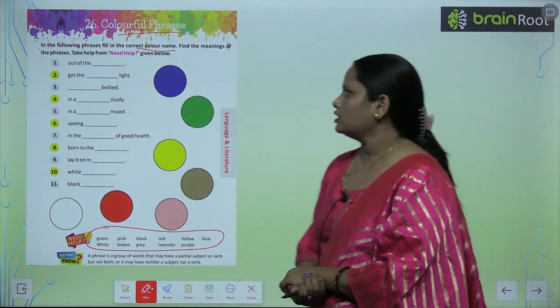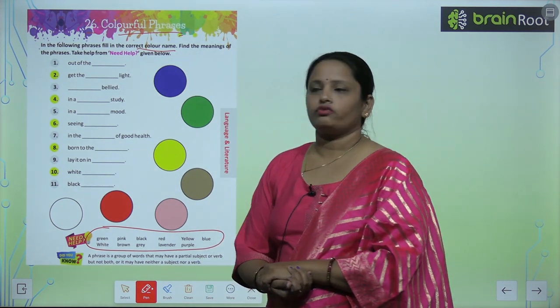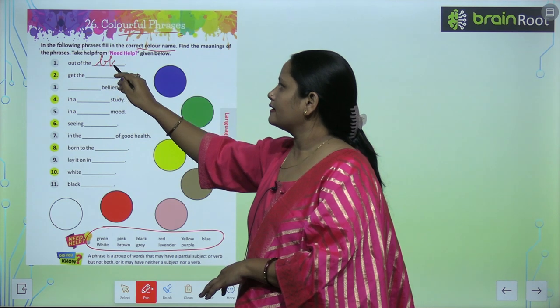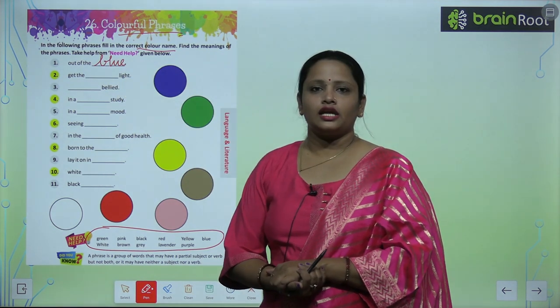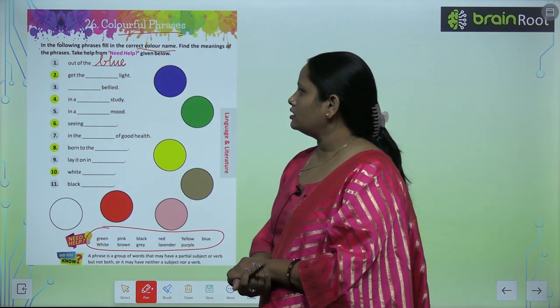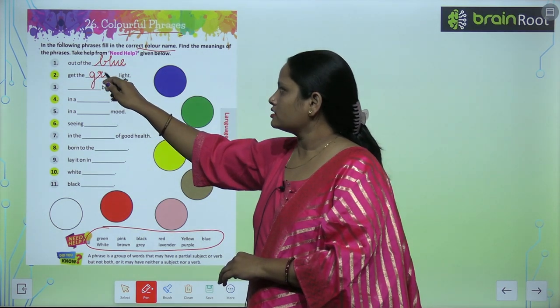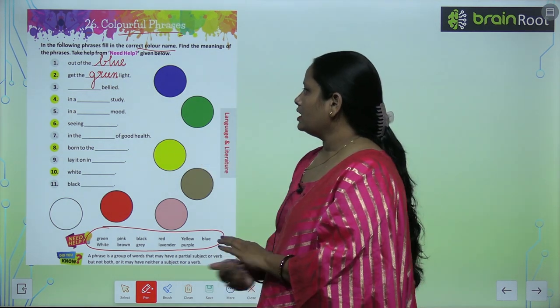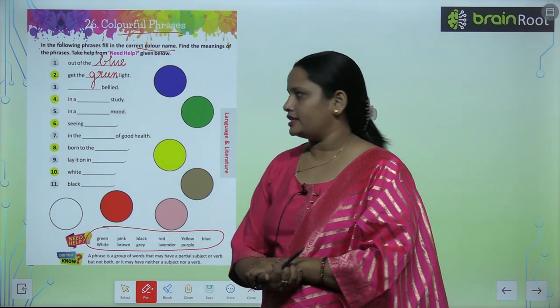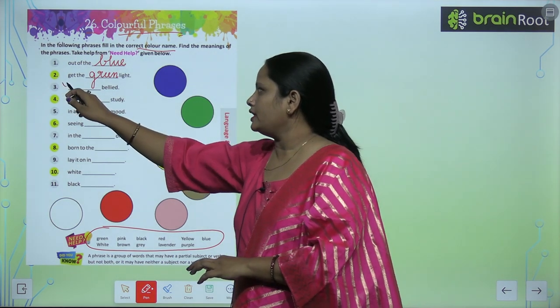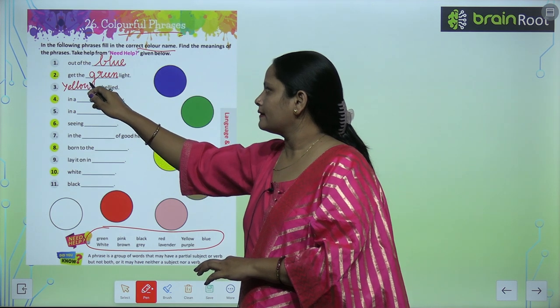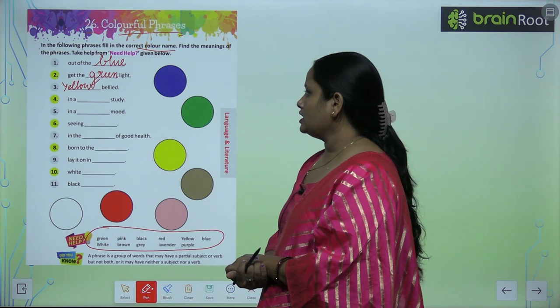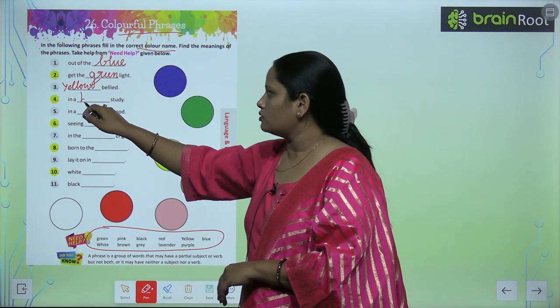So here the first one is out of the blue. Second is get the green light. Third is dash bellied, so yellow bellied. Fourth one is nr dash study, nr brown study.